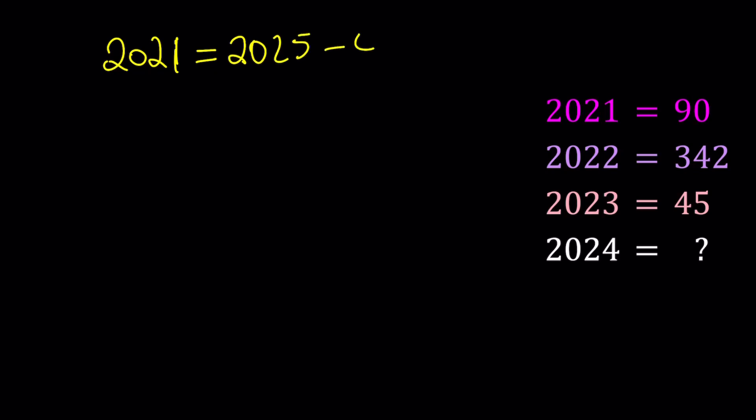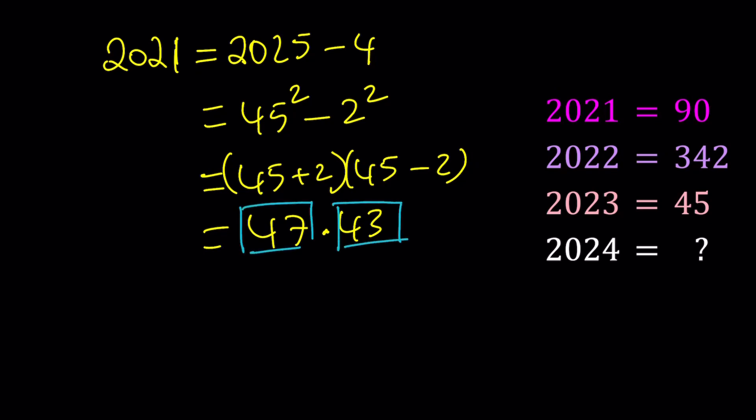2025 minus 4. What is so significant about 2025? 2025, I'm hoping that you know it's 45 squared and 4 is 2 squared. This gives you a difference of 2 squares, and then you can factor it as 45 plus 2 and 45 minus 2. And that gives you 47 times 43. Now, why did I do prime factorization? Because if you are given a puzzle, always do prime factorization. This is always a good idea. Now, think about how we could get 90 from the prime factors. And if you said, yes, we're supposed to add those up, you're right about it. Because 47 plus 43 is actually equal to 90.